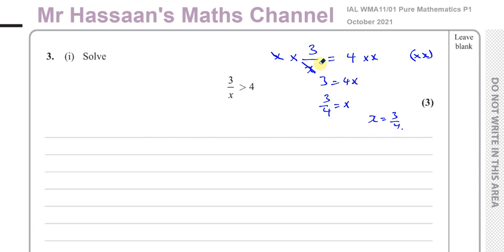That is fine with an equation. A lot of students see this and think the 4 just flies over there and becomes 3 equals 4x. But it doesn't sprout wings — you're multiplying both sides by the same thing, which is x, in order to eliminate the x in the denominator. That's what's happening mathematically.